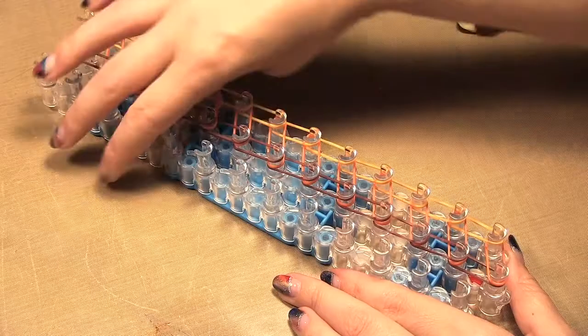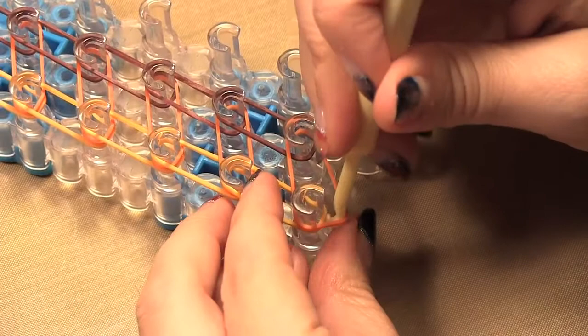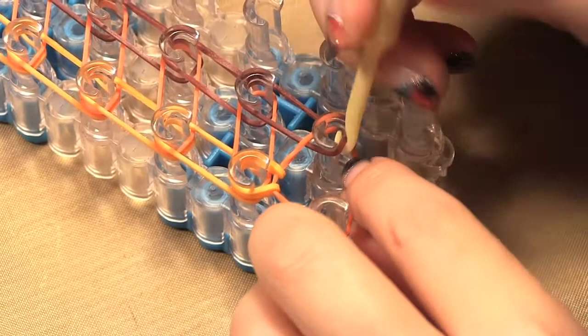So now it is time to start hooking. We turn it around so now the opening is facing us. We start down here at the bottom and we pick up the lighter orange and put it on that peg.